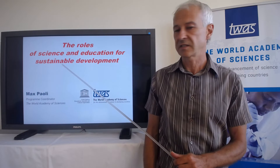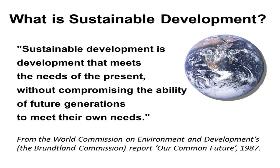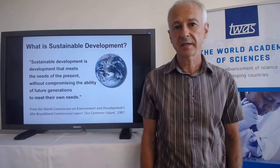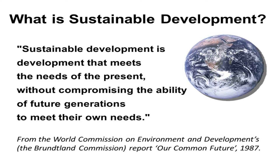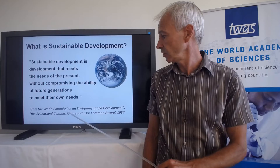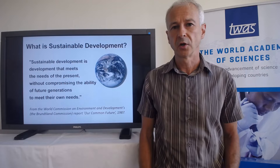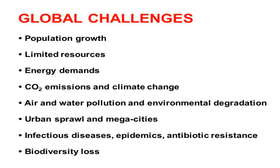Starting with sustainable development, it will be a risky start with a definition. Definitions are sometimes boring, but let's focus on this one. Sustainable development is development that meets the needs of the present without compromising the ability of future generations to meet their own needs. One of the most important aspects is not necessarily within the definition, but when it was coined — going back to 1987, by the World Commission on Environment and Development, also known as the Brundtland Commission, named by the United Nations to prepare a report called Our Common Future, in which a number of challenges were explored and defined.